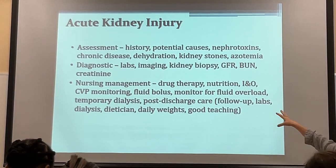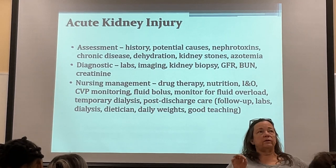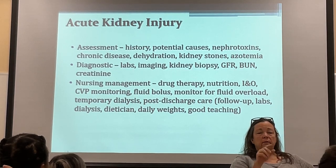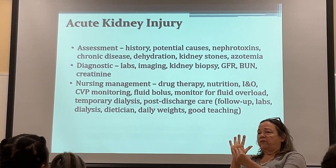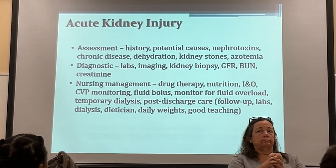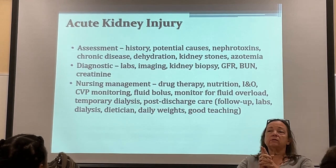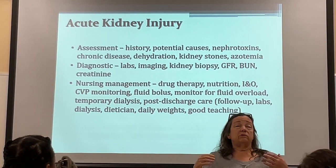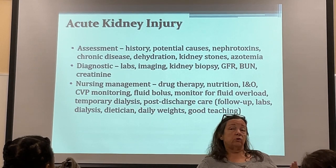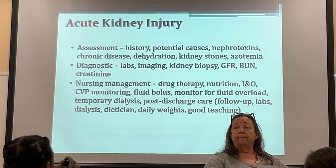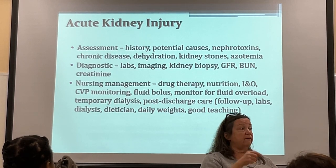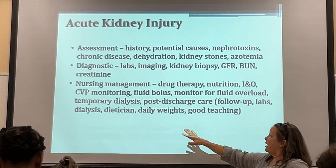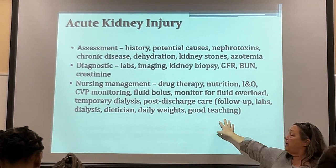Nursing management includes drug therapy, nutrition, follow-up labs, dialysis if needed, dietician consult, daily weights, and patient teaching. In the oliguric phase, restrict protein to 2–3 ounces per meal, limit sodium and phosphorus. Since phosphorus is in everything, give phosphate binders with meals. Monitor labs and maintain accurate I&O.